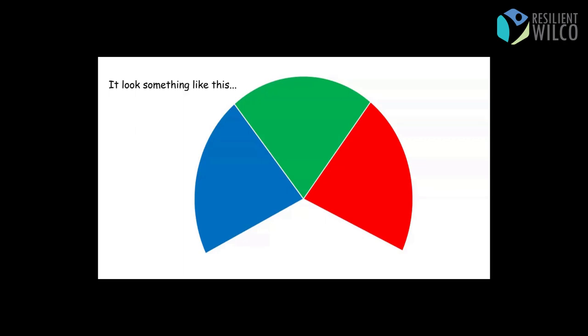It looks a little something like this. If you imagine if you're driving in a car, the speedometer, that's kind of the shape. As you can see, it's made of three different colors. So blue, green, red. Pretty simple, right? But what does that mean?